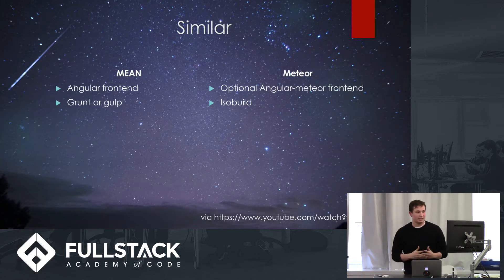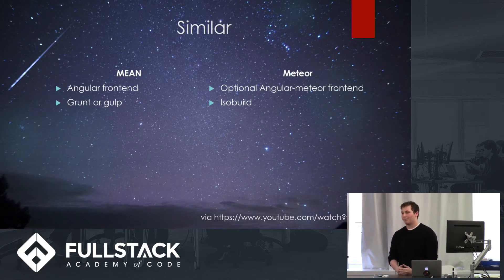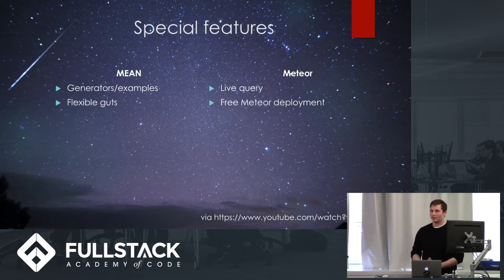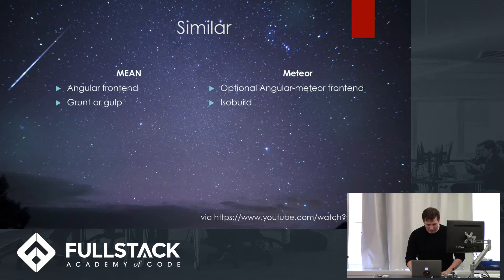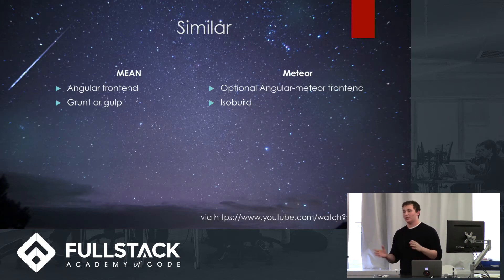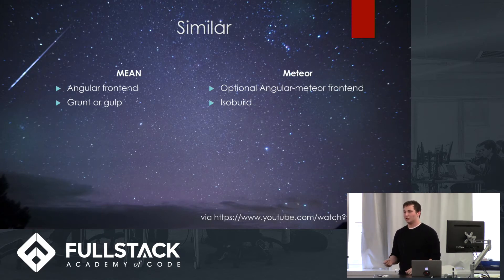Looking at more similarities: with MEAN you have your Angular front end and a task runner like Grunt or Gulp. With Meteor, you can add an Angular front end, though it comes with Blaze out of the box. Rather than Grunt or Gulp as your task runner, it has something called isobuild, which does very similar things but requires less manipulation and configuration — it just does what you need without you really needing to touch it.